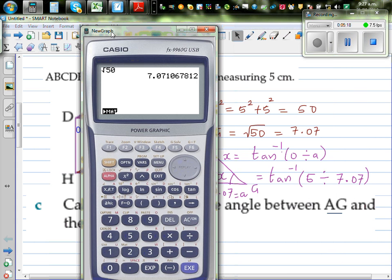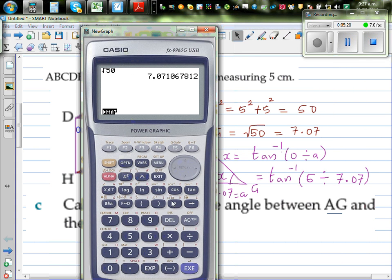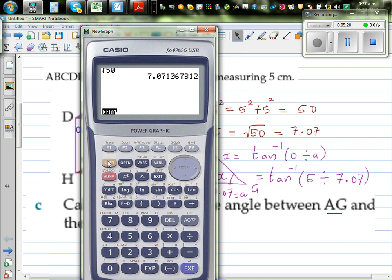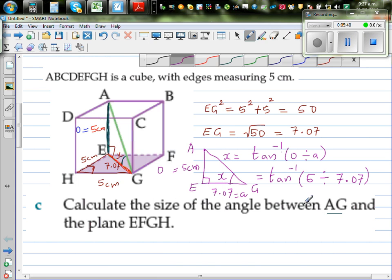So shift tan bracket, 5 divided by 7.07, equals 35.26. So you can say 35.3 degrees. So your answer x is 35.3 degrees to one decimal place.